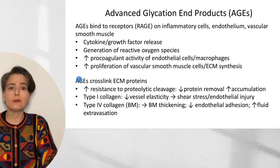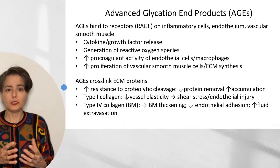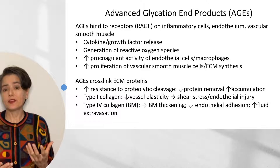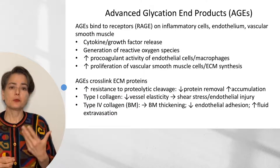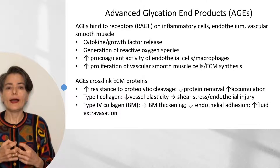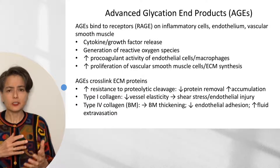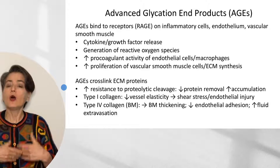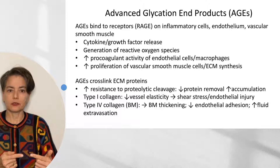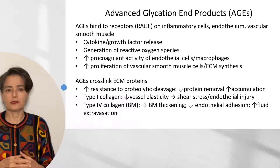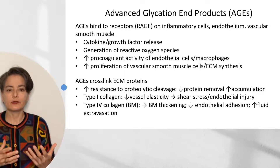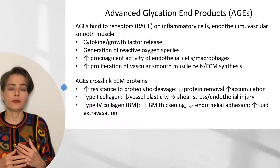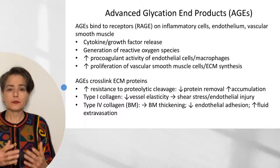Independent of these receptors, advanced glycation end products can also cross-link extracellular matrix proteins, making them more stable and resistant to proteolytic cleavage — so those proteins accumulate and are not easily removed. For example, type 1 collagen in vessel walls: cross-linking decreases vessel elasticity, so the vessel doesn't respond normally to maintain laminar flow, creating shear stress and endothelial injury — both leading to atherosclerosis. Type 4 collagen in the basement membrane can also be cross-linked by AGEs, leading to basement membrane thickening, decreased endothelial adhesion, and increased fluid extravasation — readily apparent in histologic images of diabetic glomeruli.